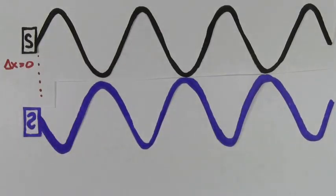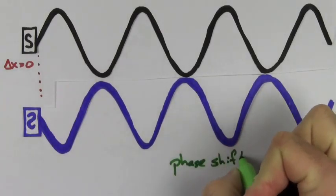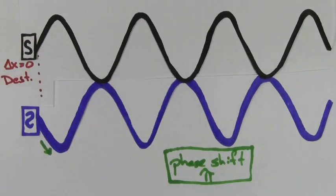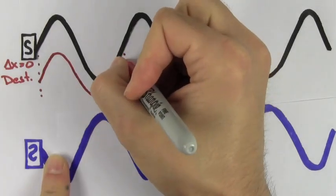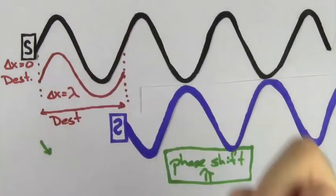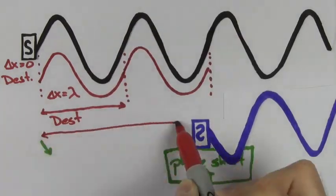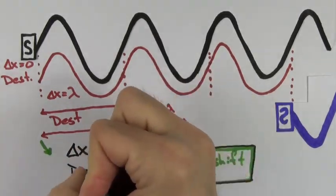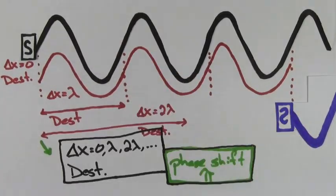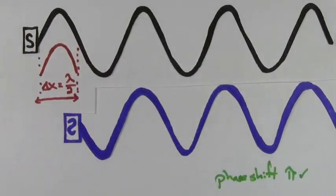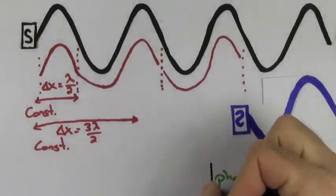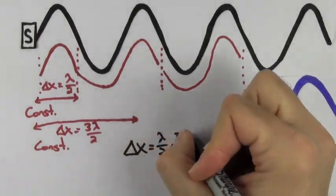If we flip the sound wave coming out of one speaker upside down, we call it a phase shift of pi. In this case, a path length difference of zero creates destructive interference since the peaks line up with the valleys. A path length difference of one wavelength will also be destructive. If one of the speakers is phase shifted by pi, path length differences of a whole number of wavelengths are all going to be destructive. Similarly, if you take your pi-shifted speaker and create path length differences equal to half-integer wavelengths, they're all going to be constructive.